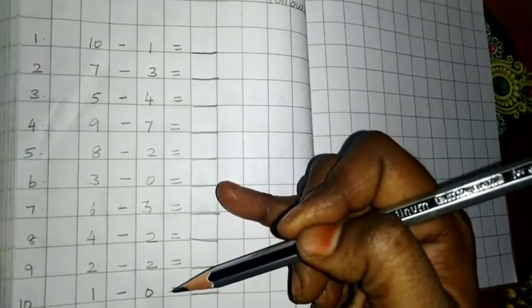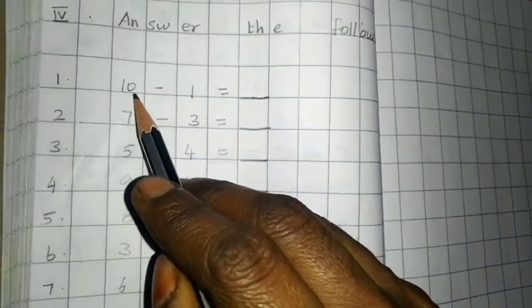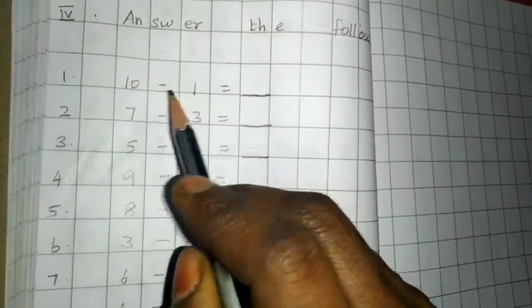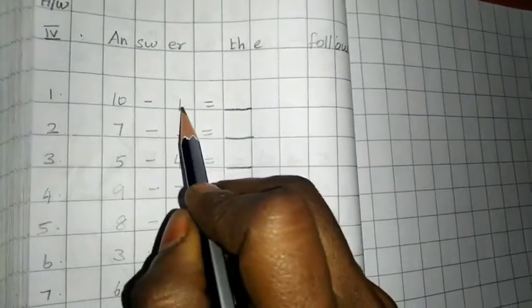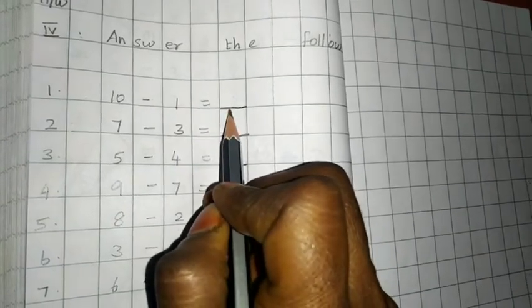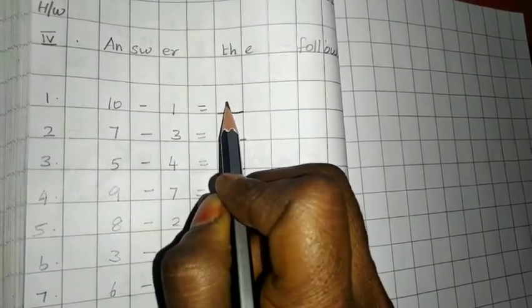Then do the calculation. Subtraction using two numbers: ten minus one is what? Use number one method. From ten, if you take away one, then what you get? You get ten minus one as nine.